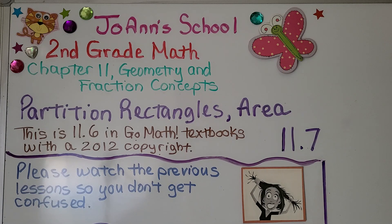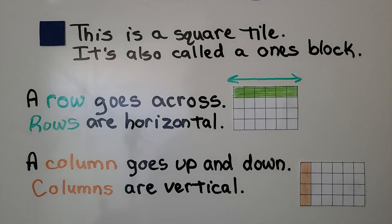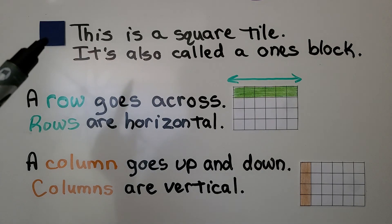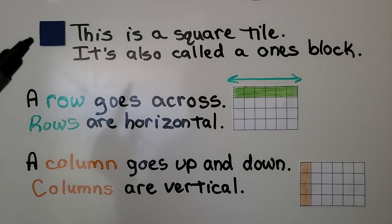Lesson 11.7 Partition Rectangles. This is about area. Now this is lesson 11.6 in the 2012 Copyright. This square is a square tile and it's also called a ones block.